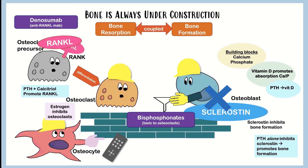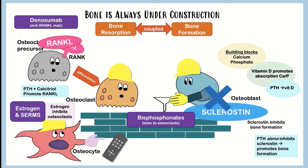Denosumab is a monoclonal antibody directed against RANK ligand. It's literally going to block RANK ligand binding to the RANK receptor, so we make fewer osteoclasts. And lastly, estrogen and the selective estrogen modulators - such as raloxifene - are just going to do what estrogen does, and they are going to inhibit osteoclasts. So that's the antiresorptives working on the osteoclasts.